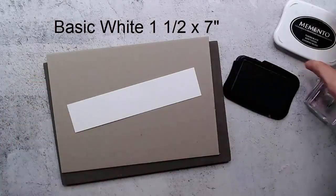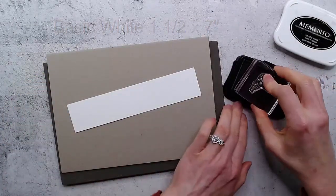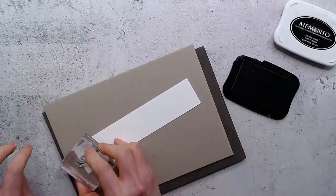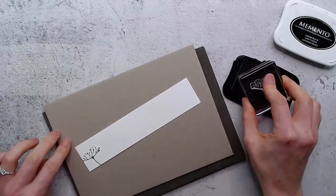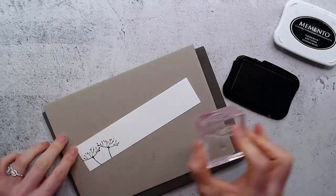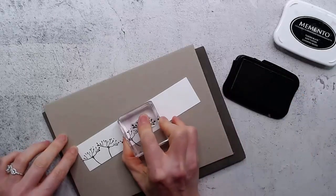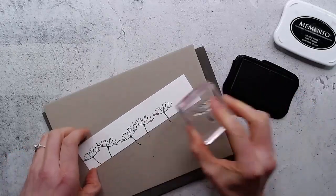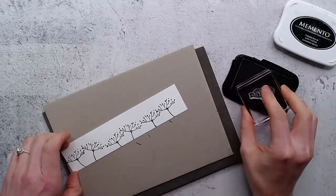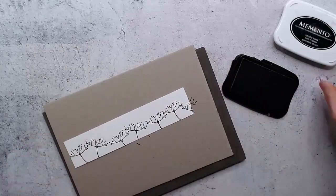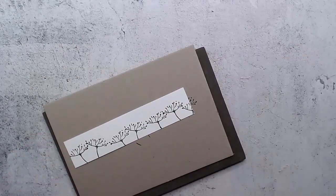I'm going to take the stem and stamp that in black. We might not often think of stamping our floral images in blacks and grays, but it can be quite beautiful and quite neutral. I'm just going to stamp them this way.